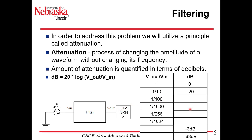If V_out over V_in is 1 over 100, we get minus 40 dB. 1 over 1,000 gives minus 60 dB — that's 10 to the minus 3, so log gives minus 3, times 20 equals minus 60 decibels. If the fraction is 1 over 256, we get roughly minus 48 dB. And 1 over 1024 gives approximately minus 60.206 dB.